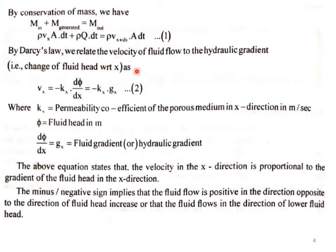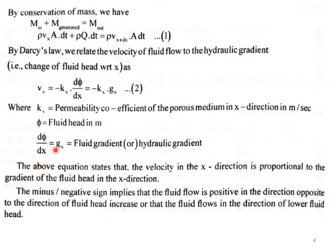By Darcy's Law, we relate the velocity of fluid flow to the hydraulic head. The change of fluid head with respect to x gives: V(x) = -Kx · (dφ/dx) = -Kx · gx. This is equation number 2, where Kx is the permeability coefficient of the porous medium in the x-direction in meters per second, φ is the fluid head in meters, and dφ/dx = gx is the hydraulic gradient.